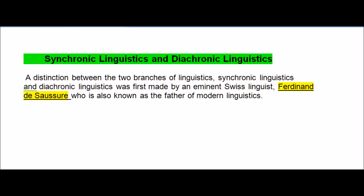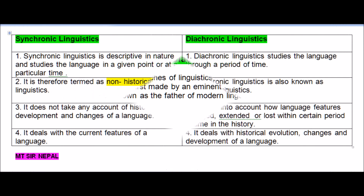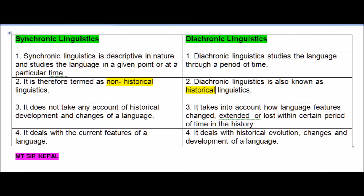Ferdinand de Saussure is known as the father of modern linguistics — keep that in mind for objective questions. Now let us look at the differences between synchronic and diachronic linguistics for five marks. Synchronic linguistics is descriptive in nature.